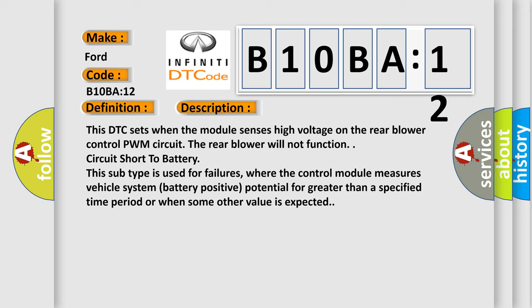This subtype is used for failures where the control module measures vehicle system battery positive potential for greater than a specified time period or when some other value is expected.